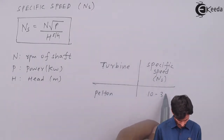Next, let's calculate the discharge Q. Discharge equals area times velocity. The area is found from the jet diameter: A = (π/4)d². The jet diameter is 20 cm = 0.2 m, so we substitute to get Q.